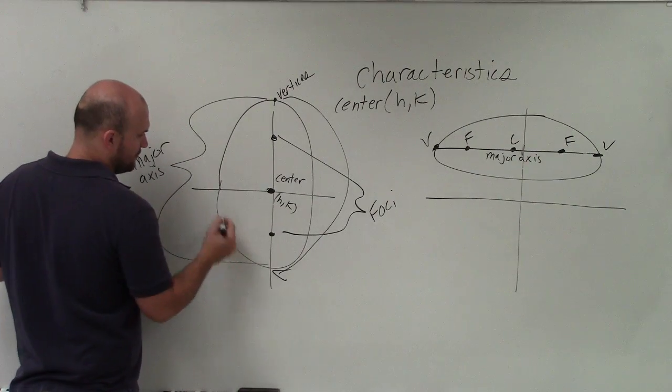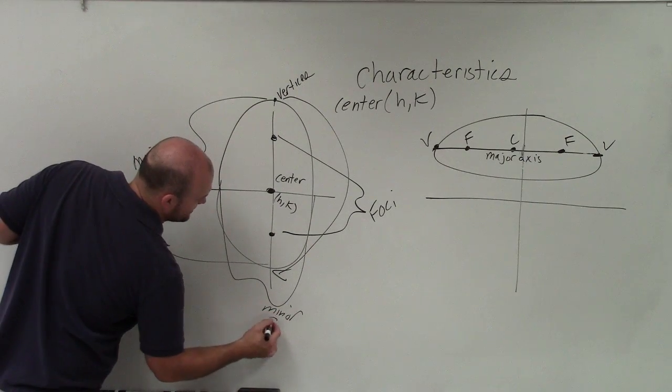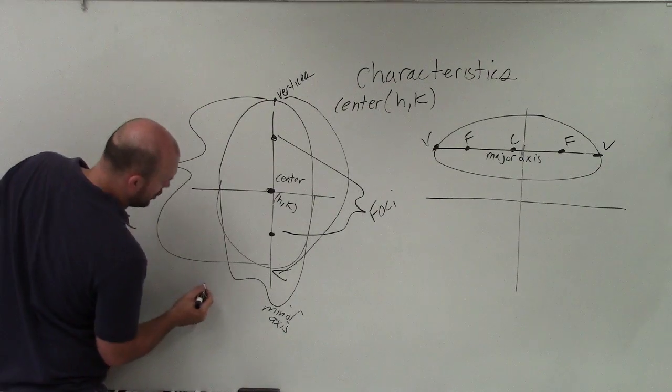And then here is what we call our minor axis. And at the end of the minor axis is your, what we call, our co-vertices.